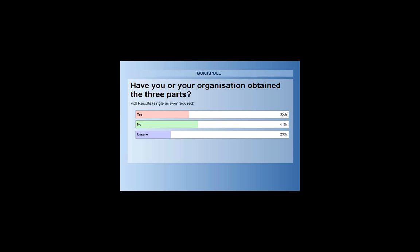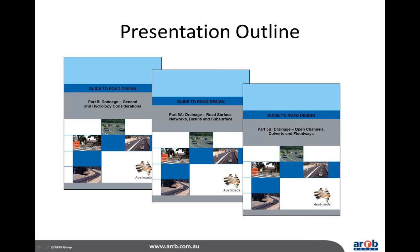Peter, can you see those results on your screen? We do have the majority of people saying no — 41%. What do those results mean for you? I think that means there's still an opportunity for people to obtain those guides, and I'm hoping that after this webinar they've been inspired to pursue more information contained within them.